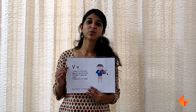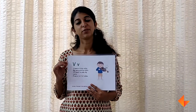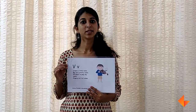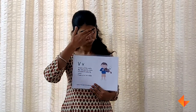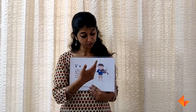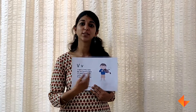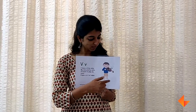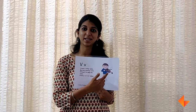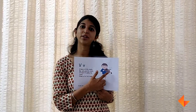Today I will show you how to teach the letter V using the phonics card. In the phonics card you will start with talking about the picture. Ask the children what do you see in the picture. There is a boy and he is doing something. What is in his hand? Ask them if they have seen something like this before. Tell the children this is called a violin.